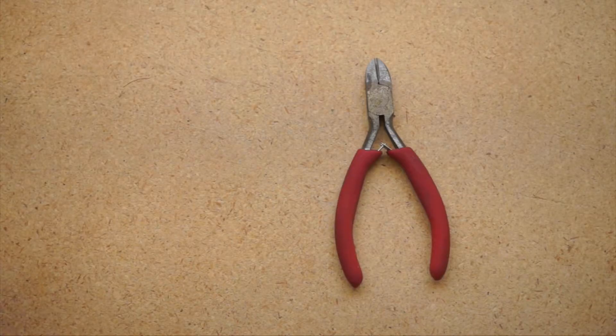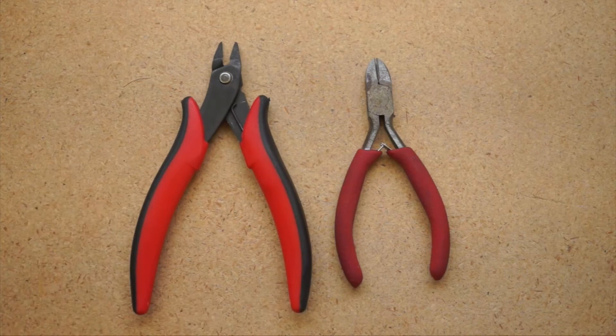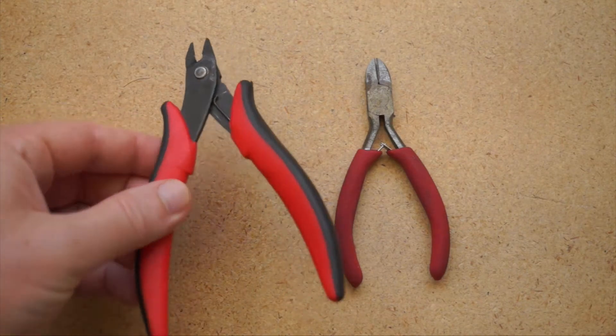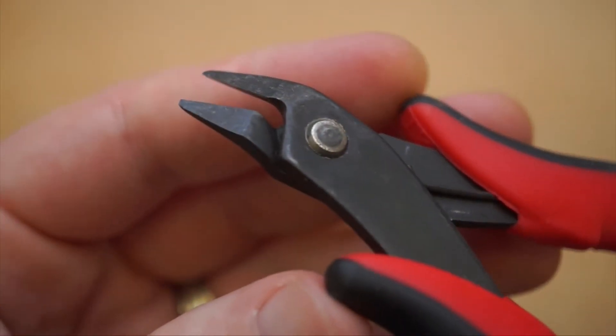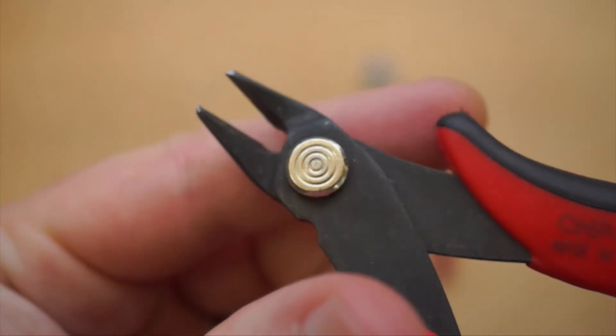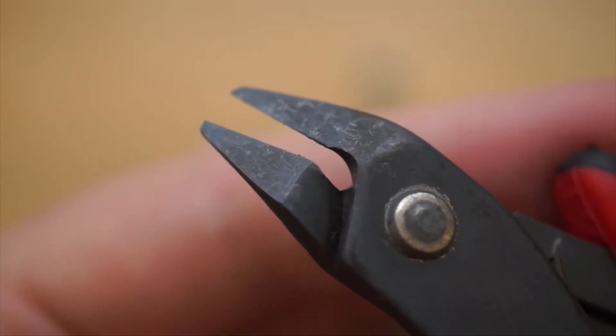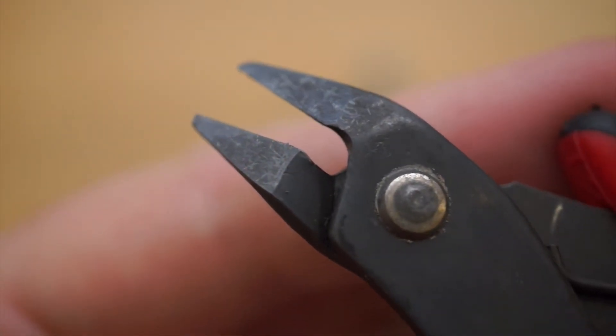For that, you need flush cutters, and it's a subtle distinction, but these are so much more satisfying when you're cleaning up the bits of wire on a project. Because the cutting edge is moved all the way out front, you can take that cut right down to the board if you want.